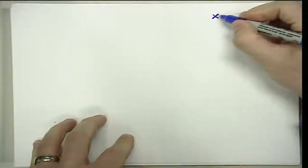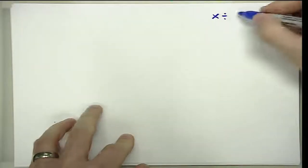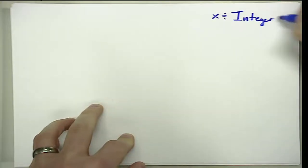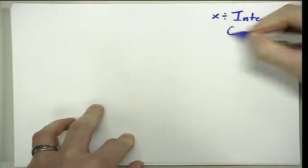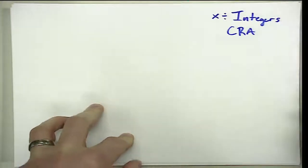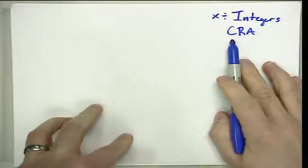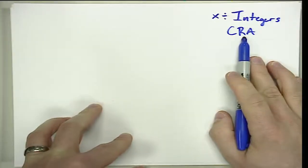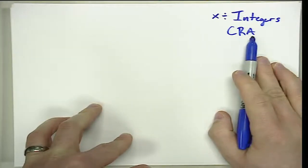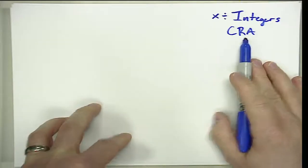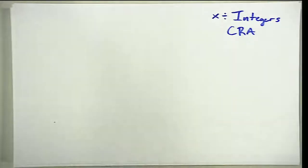In this video we're going to take a look at multiplying and dividing integers across a CRA progression. Recall that C stands for Concrete, R stands for Representational, and A stands for Abstract. We're going to work across that entire progression in this video.